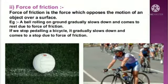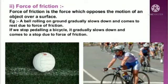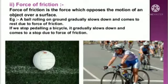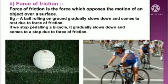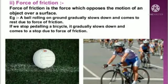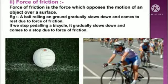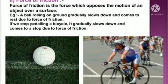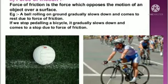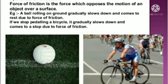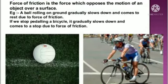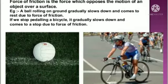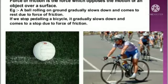The next type of contact force is force of friction. Force of friction is the force which opposes the motion of an object over the surface — it acts in the opposite direction of motion. For example, a ball rolling on the ground gradually slows down and comes to rest due to the force of friction.